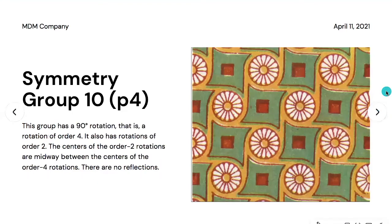Symmetry group ten is named P4. This group has perpendicular reflection axes and a 90-degree rotation — that is, a rotation of order four. It also has rotations of order two. The centers of the order-two rotations are midway between the centers of the order-four rotations, and there are no reflections in this pattern.